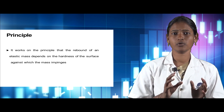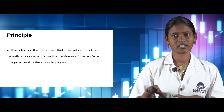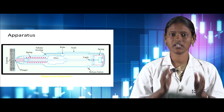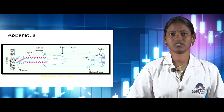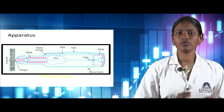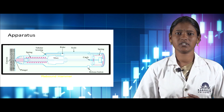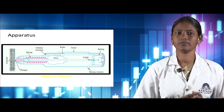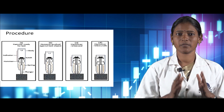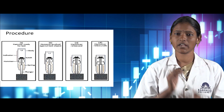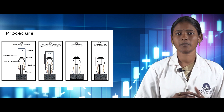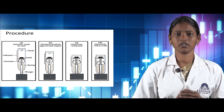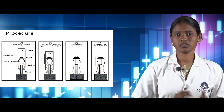The principle behind the rebound hammer test is that it works on the rebound of an elastic mass, which depends upon the hardness of the surface against which the mass impinges. In the procedure, the hammer is first made ready for test, then pushed against the object, then released, and finally the hammer rebounds.